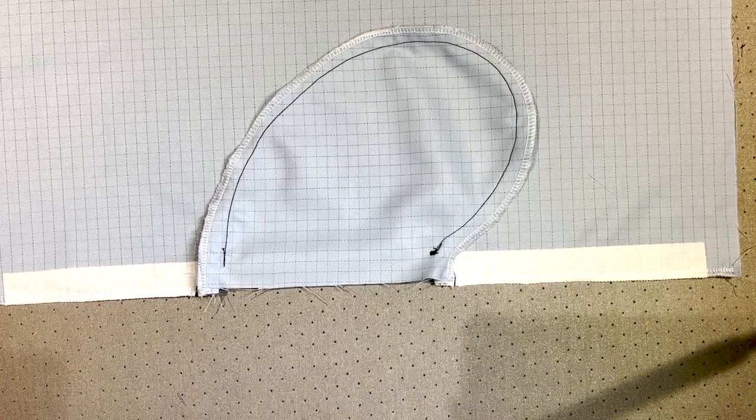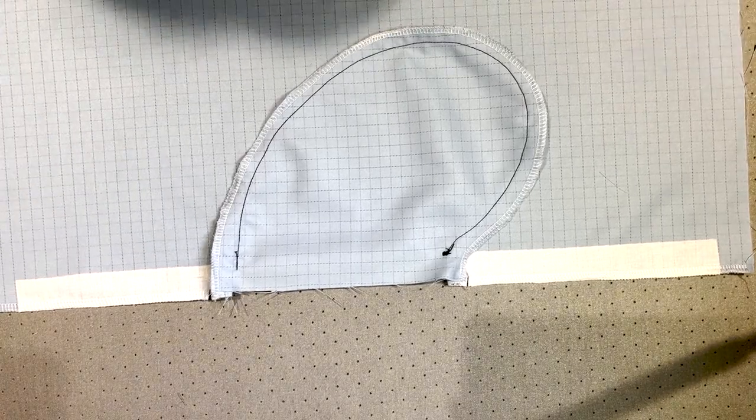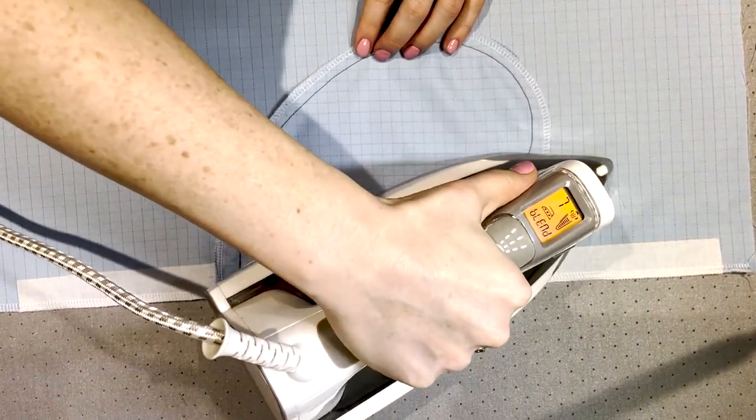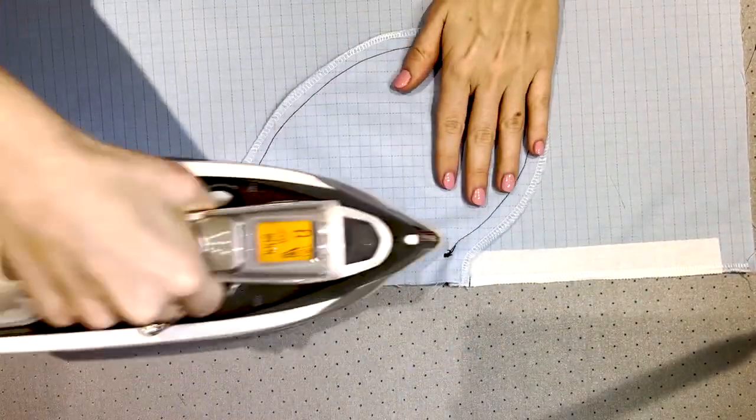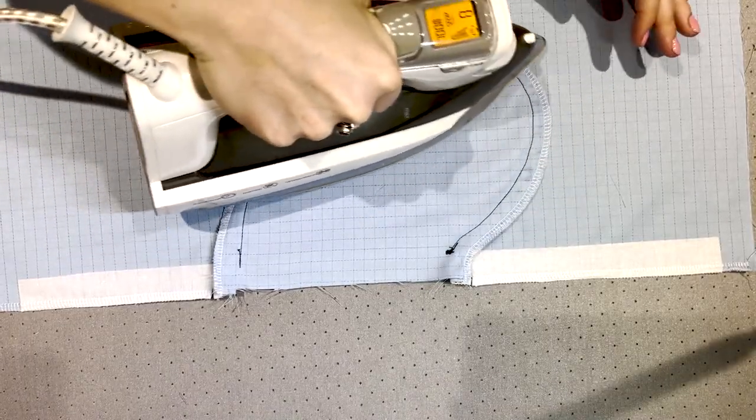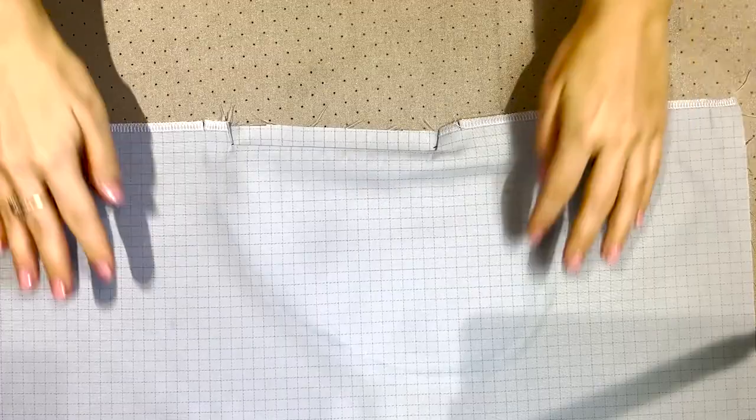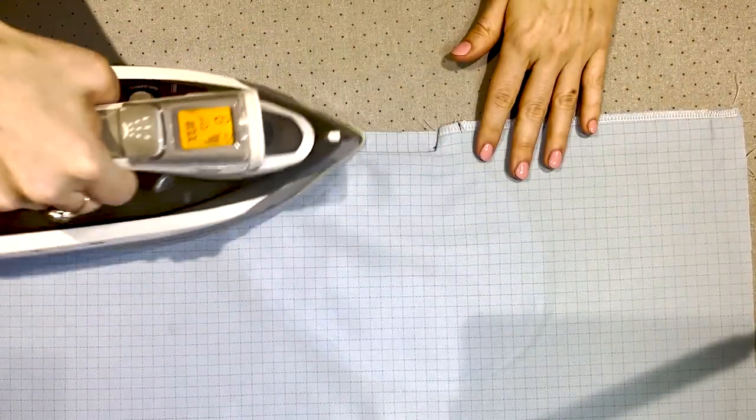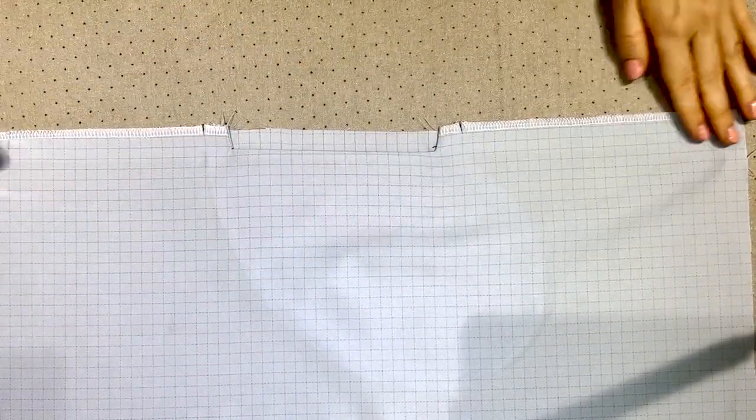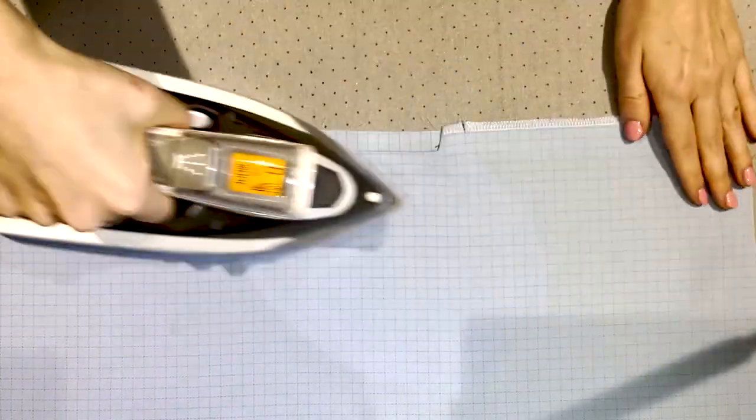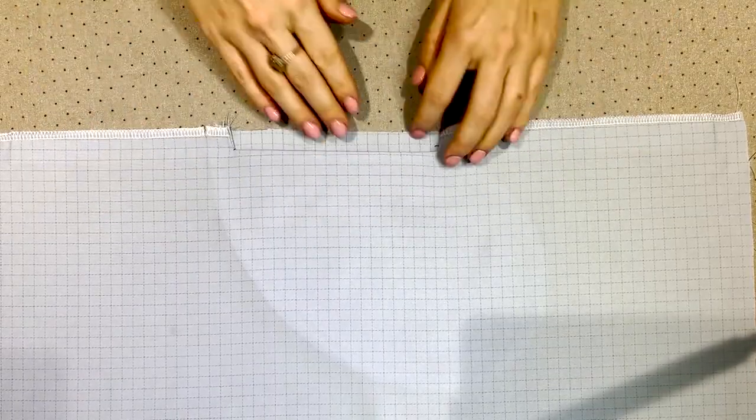Before going any further, press all of your pocket from the back and the front. This will get rid of any gathers or tucks that have been built up in the fabric after you've manipulated it round. You can now see you have a nice straight edge which to work with.